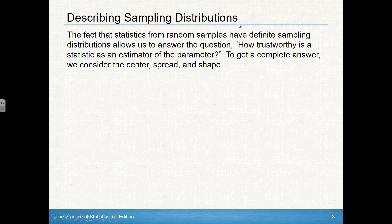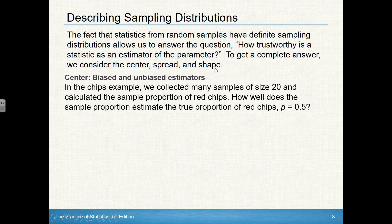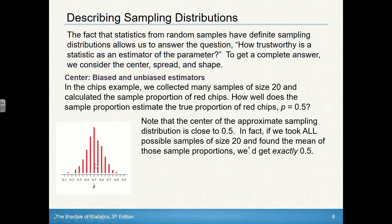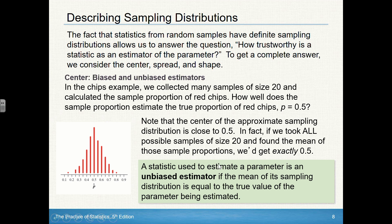When we describe sampling distributions, we're talking about shape, center, and spread — just like when we described any distribution back in chapter one. When we talk about the center, we want to know: are these values biased or are they unbiased estimators? If something is unbiased, the mean of the sampling distribution is the same as the mean of the population. Since in the chips example we collected many samples of size 20 and calculated the sample proportion of red chips, the distribution is centered at 0.5, so we refer to this as an unbiased estimator. A statistic is an unbiased estimator if the mean of its sampling distribution equals the true value of the parameter being estimated.